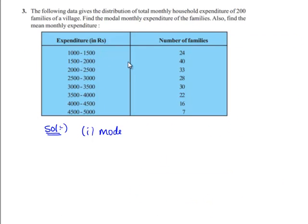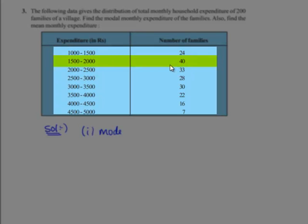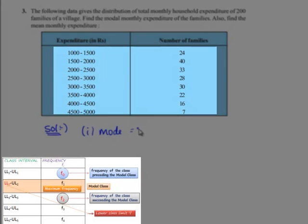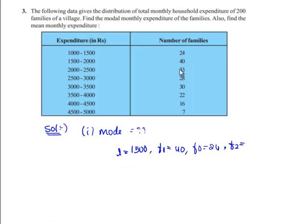Since the maximum number of families having their total monthly expenditure in the interval 1500 to 2000, that is 40, the lower limit will be L equal to 1500 and F1 the frequency of modal class will be 40. The preceding frequency F0 will be 24, that is the above, and the succeeding frequency F2 will be after 40, that is 33. And as the modal class is 1500 to 2000, the class size is 500.